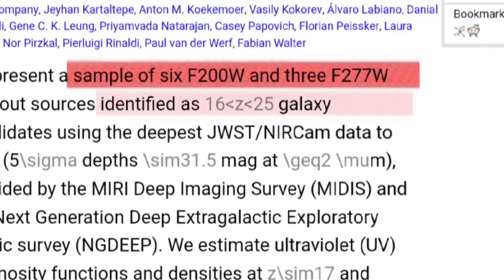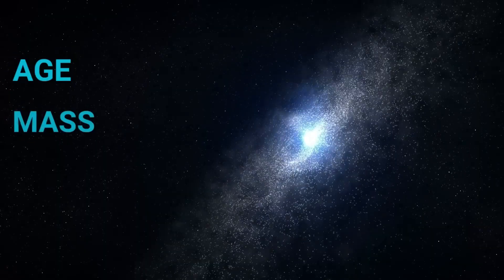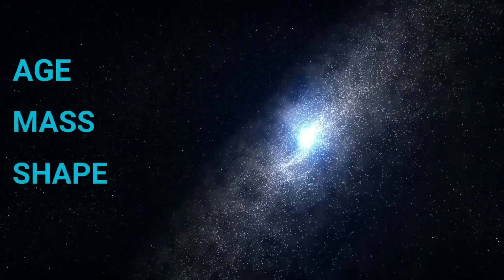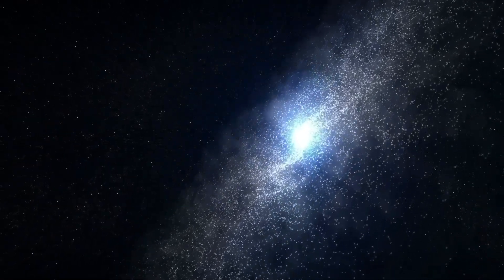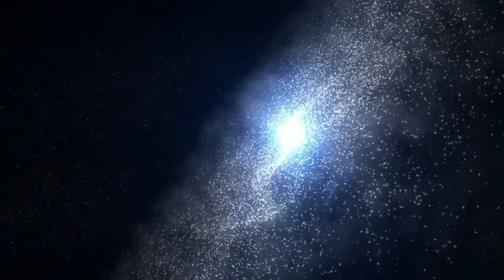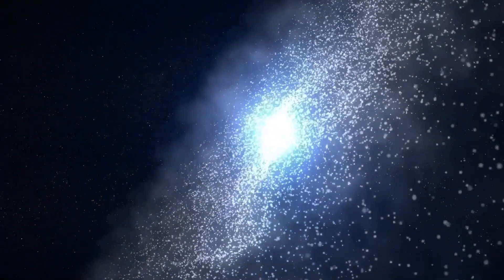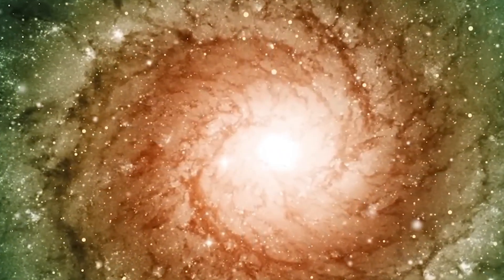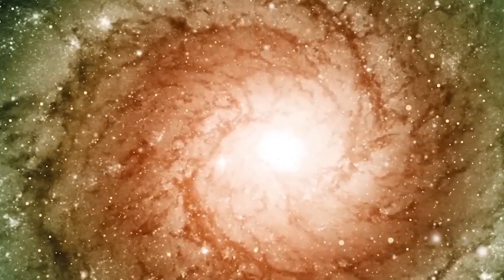Some scientists are exploring an intriguing alternative, the galactic origin of light elements model, or GOLE. Instead of lithium forming in the initial cosmic fireball, this model suggests it was slowly forged within the first generations of stars over millions of years. This means those early stars didn't just light up the universe. They also sowed the seeds for life's building blocks, patiently enriching space over eons.